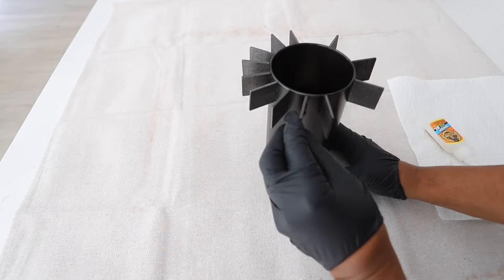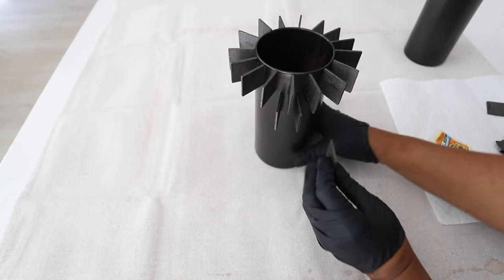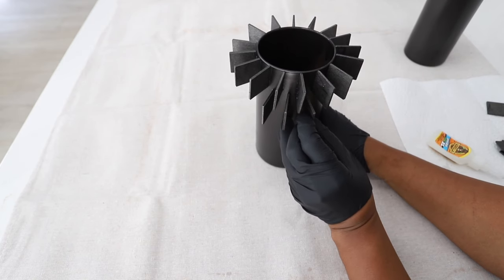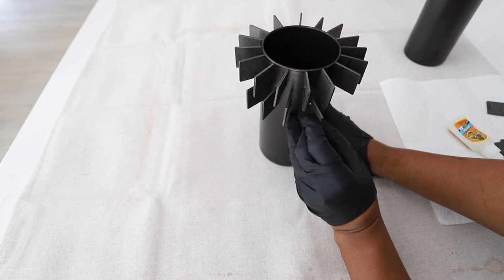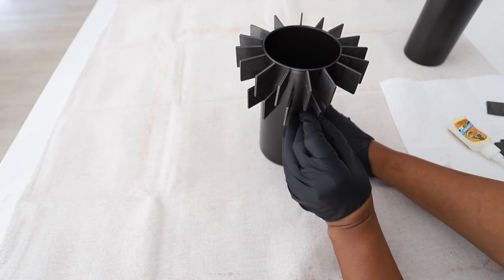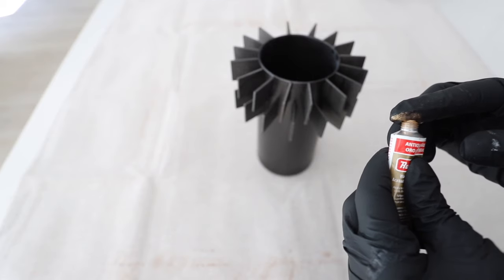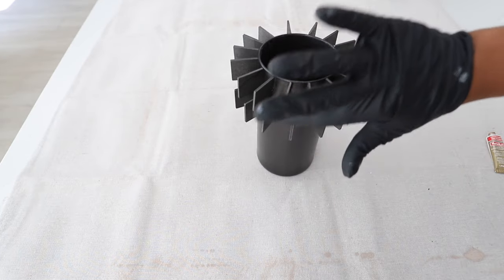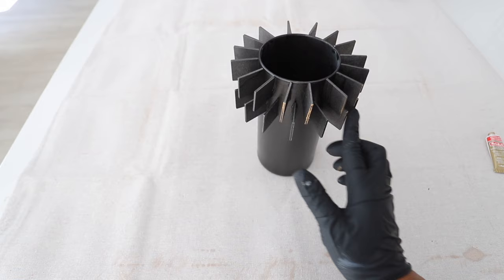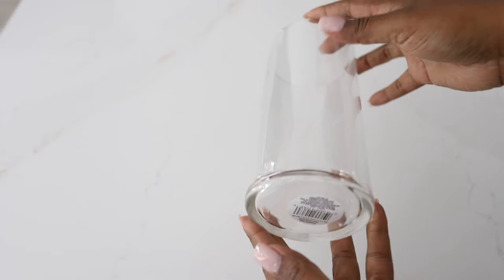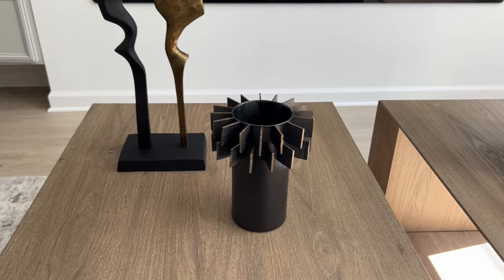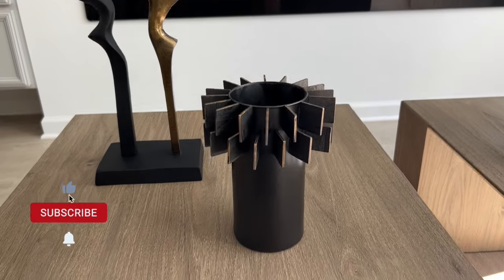After I finished adding the first row of squares, I decided to add a second row. You don't have to do this. You could just stop at the first row, but I wanted to see how it would look. The final step is to add a little bit of antique gold rub and buff on the ends to make it look more like metal. So this is what it looked like in the beginning and now look at it. Very cool, right?